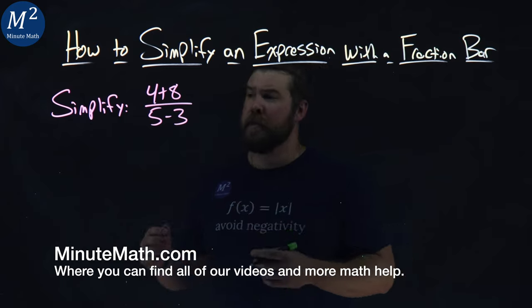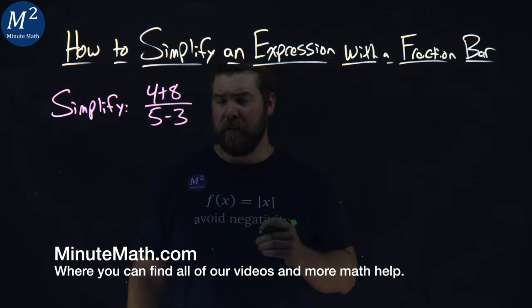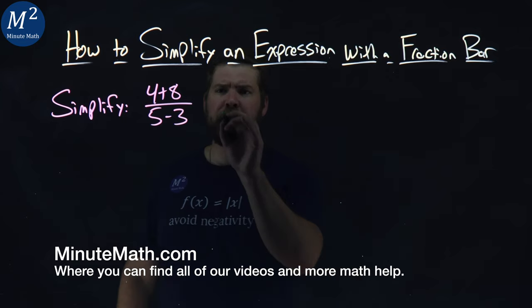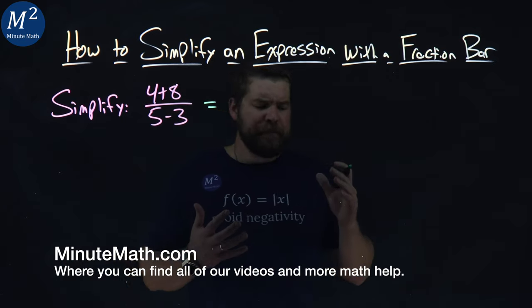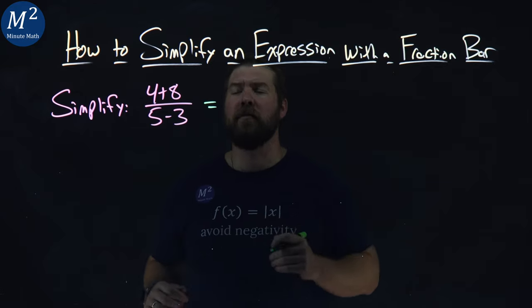We're given this problem here: simplify 4 plus 8 over 5 minus 3. Okay, we first need to add what's in the numerator and the denominator. Simplify each one of those individually.